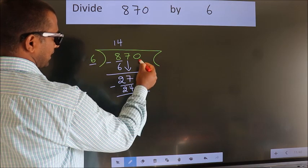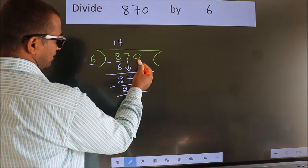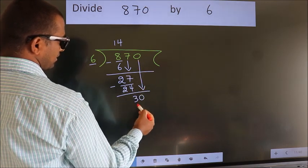After this, bring down the beside number. So, 0 down. So, 30.